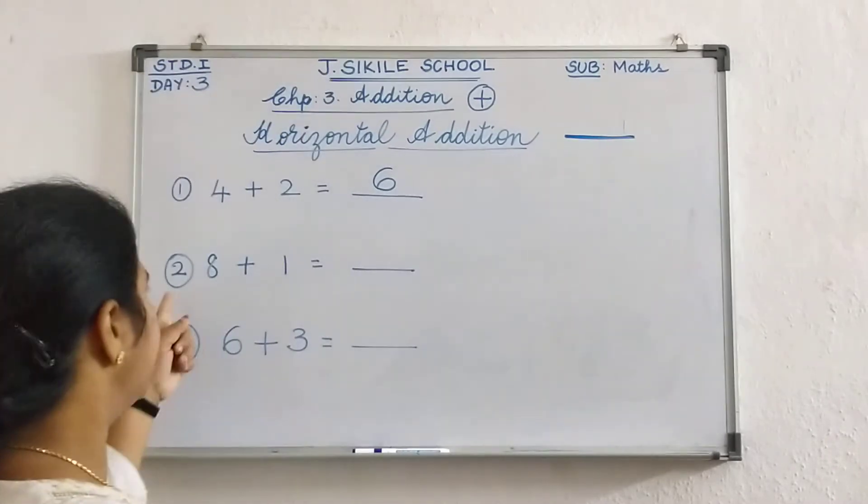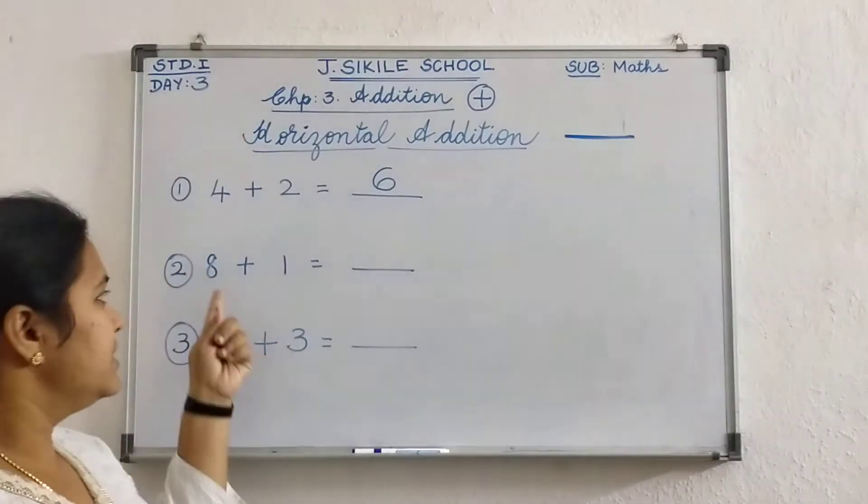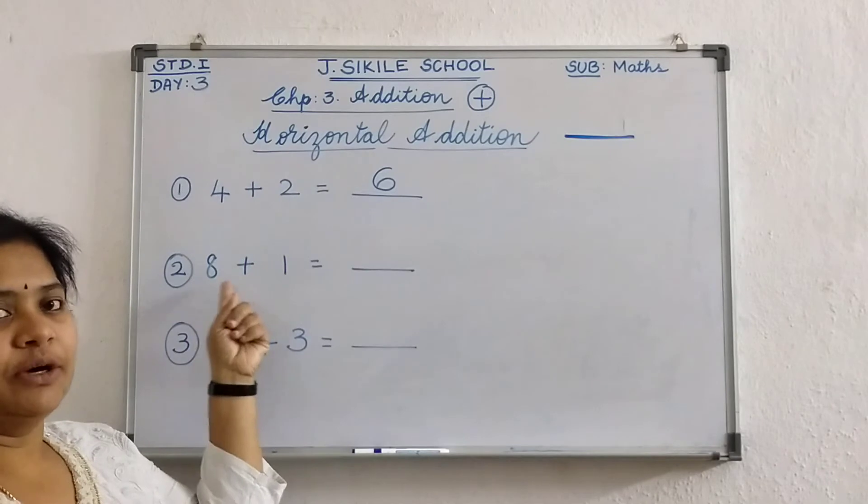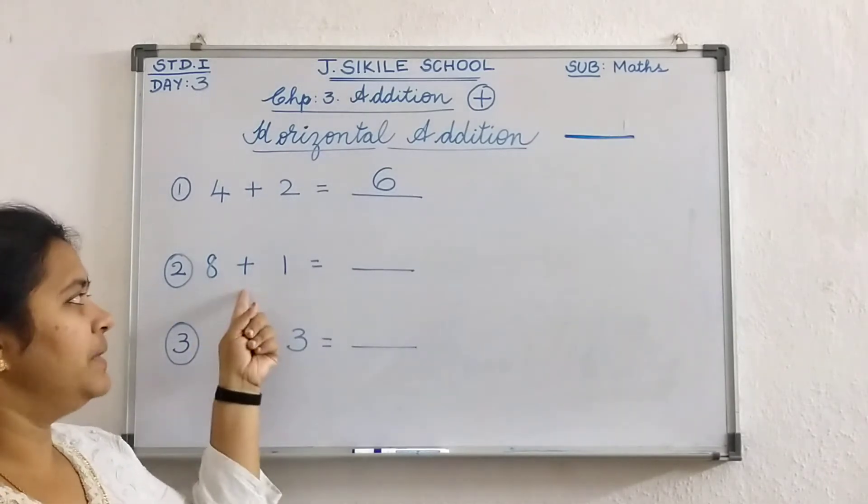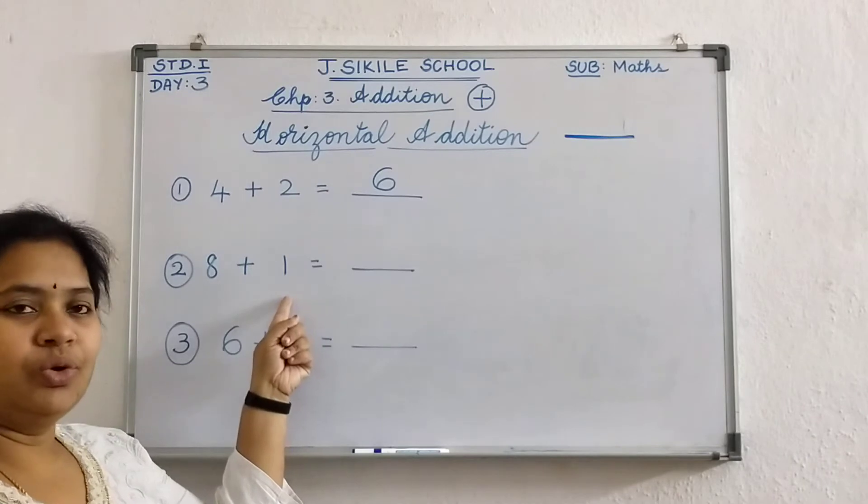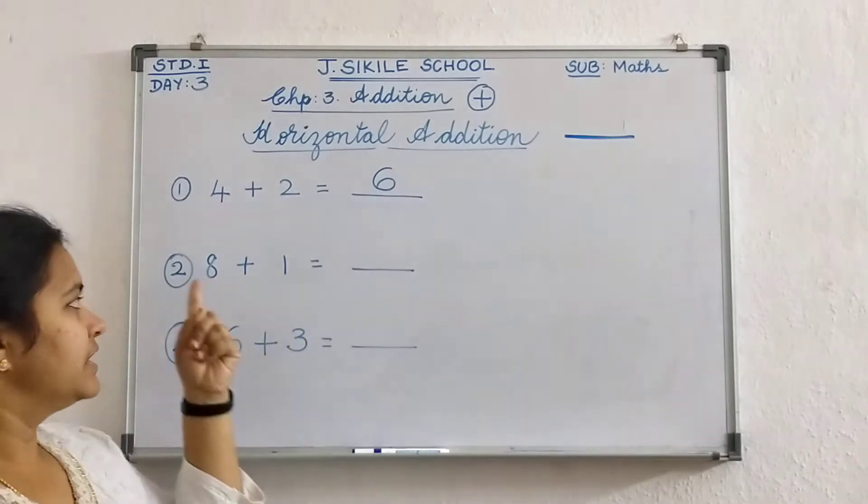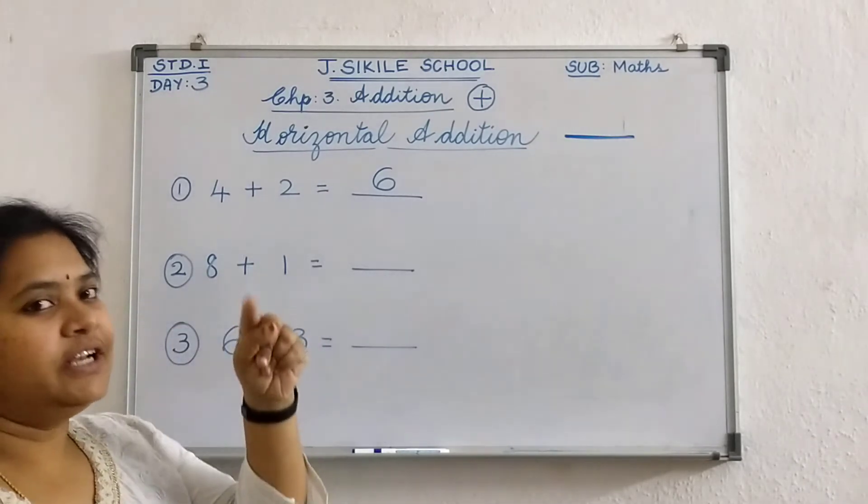Okay children. Now coming to second question. What is the number here? 8 plus 1. Very good. 8 plus 1. So take one finger. Count 8 after 9.